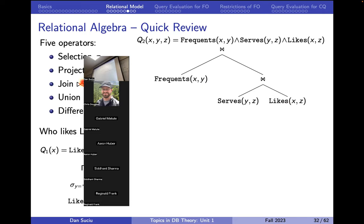We have seen selection, projection, join. Let's talk about union and difference. The slightly more difficult first-order sentences that can still be converted into relational algebra are those that have universal quantifiers. Relational algebra is great at expressing existential quantifiers but is not designed to express universal quantifiers directly. However, there is a simple methodology: apply negation twice to convert a universal quantifier into an existential one.